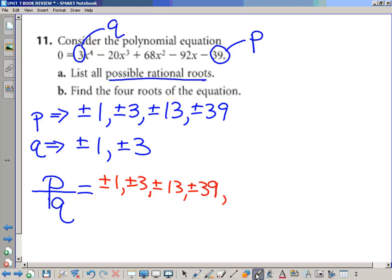So that completes the list. We need to do 1 third, 3 thirds... do we need to worry about 3 thirds? It's already here. It's 1. 13 thirds listed. No, so we better add it to the list. What about 39 thirds? It's 13. So we need to add to our list plus or minus 1 third and plus or minus 13 thirds. So we have 1, 2, 3, 4, 5, 6 times 2 is 12 potential candidates for the rational roots.